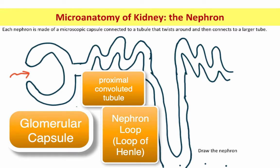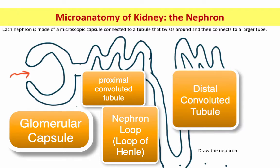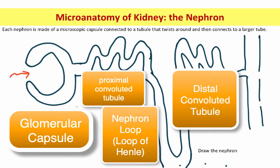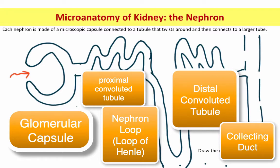It leads into another twisty, turny tube that is not directly connected to the glomerular capsule, but it is also a tiny tube and also twisty and turny. So it is the distal convoluted tubule. Remember in the last video, I said there are millions of these nephrons in each kidney. Each of them plugs into a larger tube.